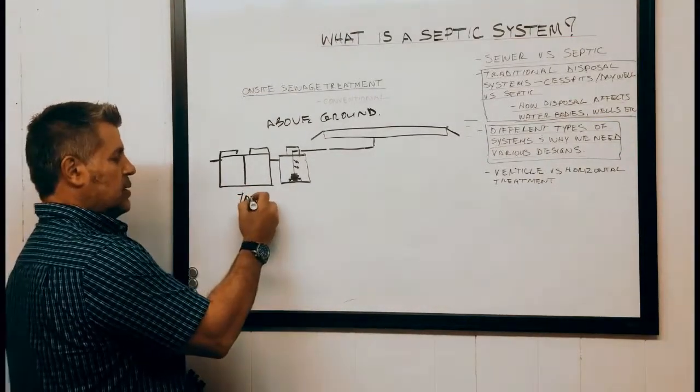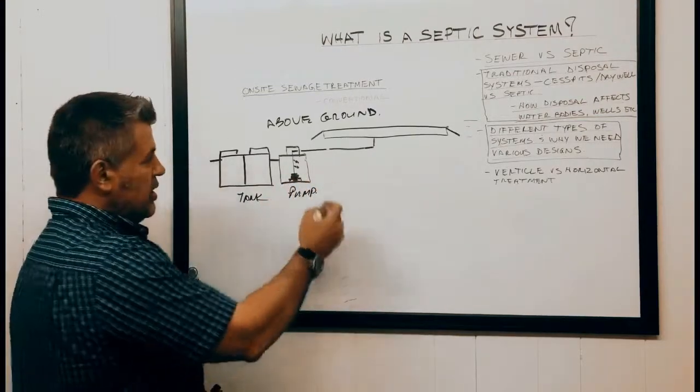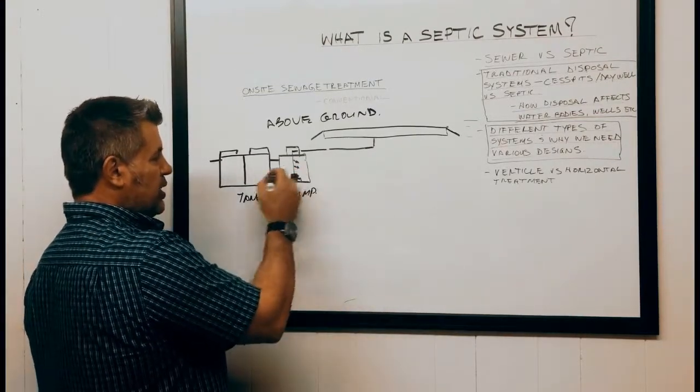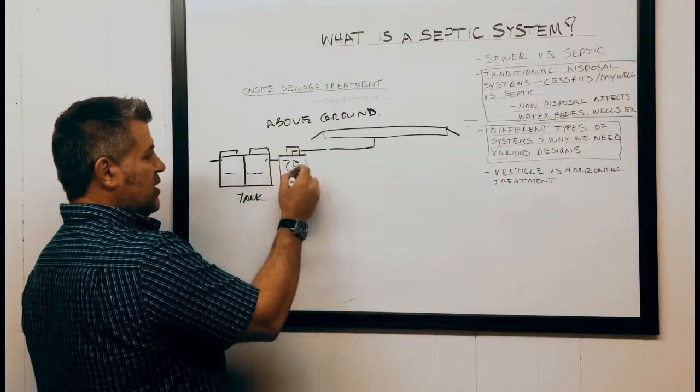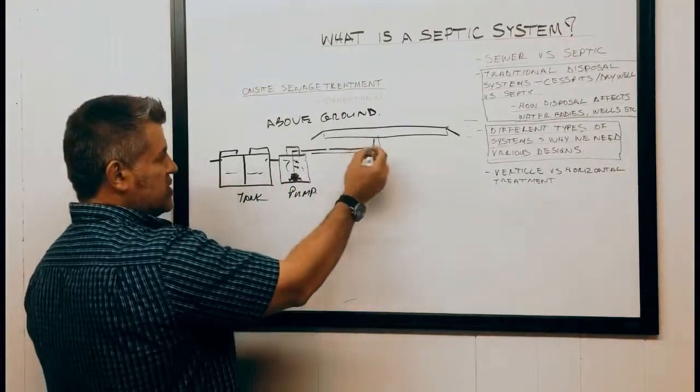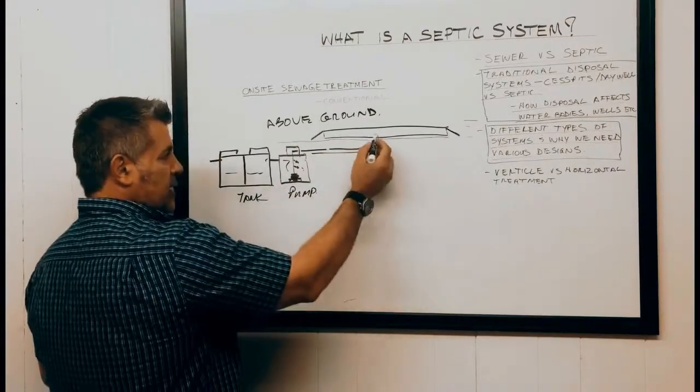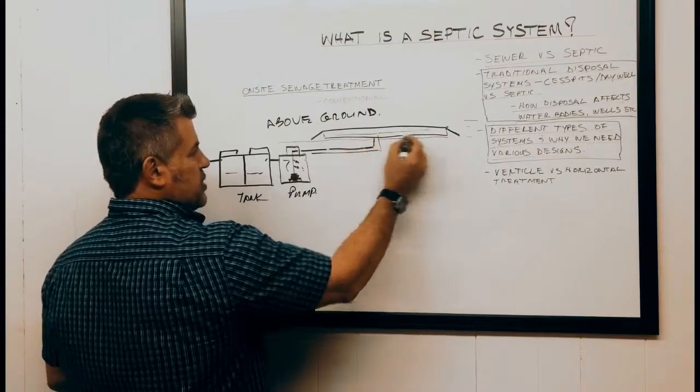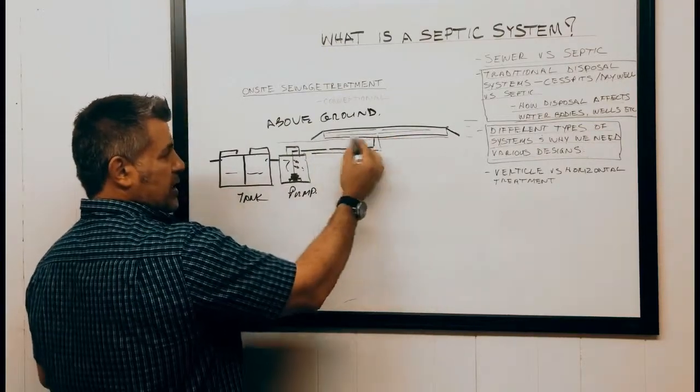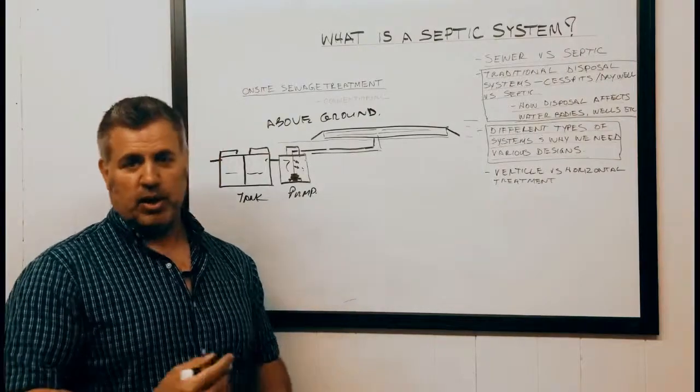Basically what this means is again you have your septic tank and then your pump station. Your pump station then delivers that effluent from the septic tank into the pump tank, delivers it into our above ground septic field. The ground could be at this layer, and our dispersal pipes will all be pressure into a sand media that is allowed in our code book.